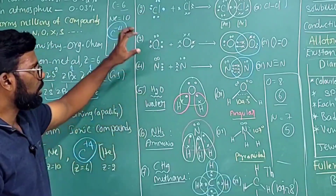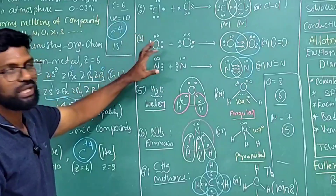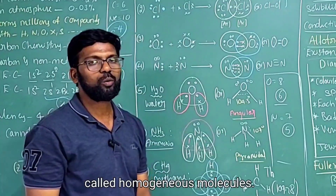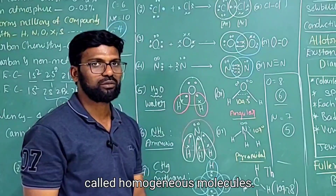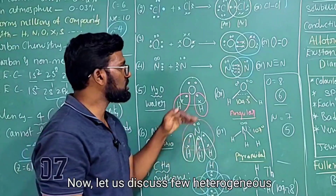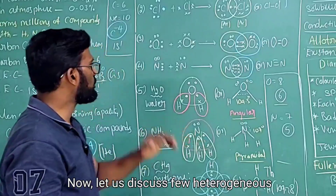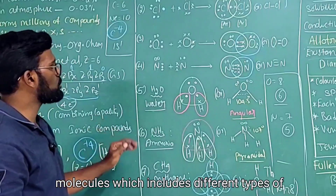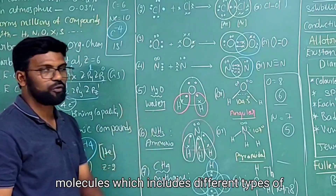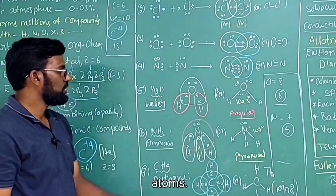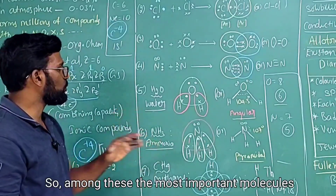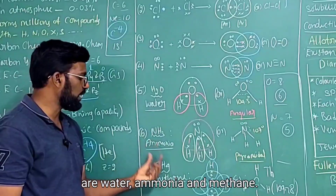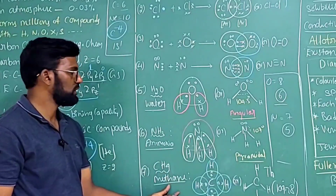In all the previous examples we took similar atoms — these types of molecules are called homogeneous molecules. Now let's discuss a few heterogeneous molecules, which include different types of atoms. The most important examples are water, ammonia, and methane.